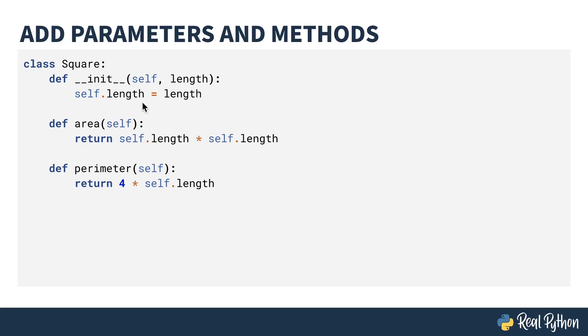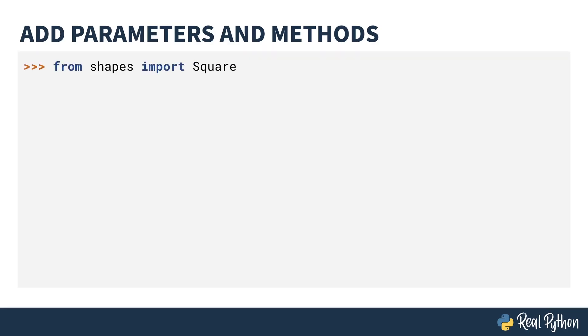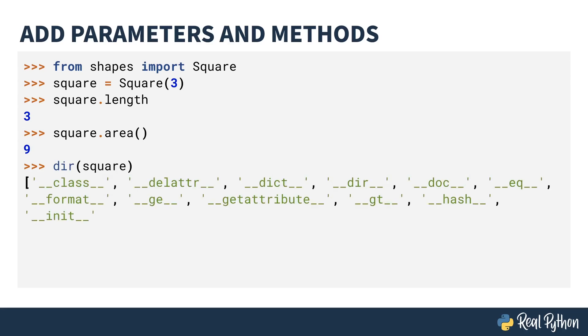In addition to storing the length, I've also defined two methods, an area and a perimeter. These return the area and perimeter of the square itself by doing math on the length. You can see this inside of the REPL. Importing from square like before. Now I'm passing in the length of three as part of the constructor. I get my length. It returns a value three. I can call the area method. I get three times three is nine. And once again, I can look at dir to examine the object.